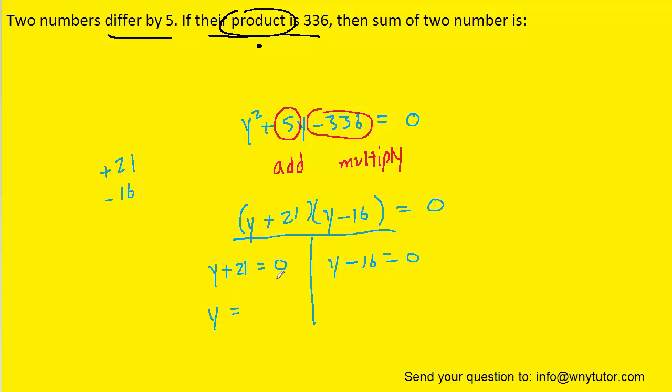And then we'll go ahead and solve these equations separately from one another. And when we do that, we would subtract 21, and we would see that y is equal to negative 21. And then when we add 16, we could see that y is equal to positive 16.